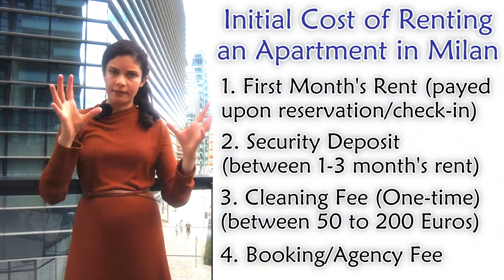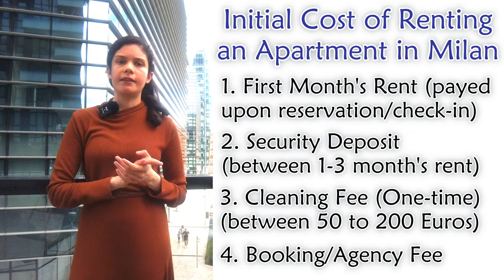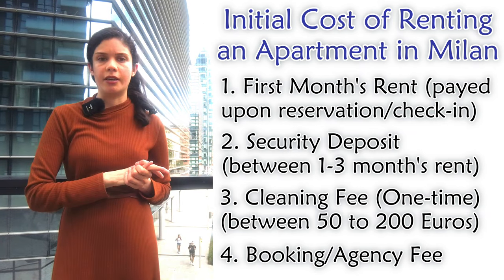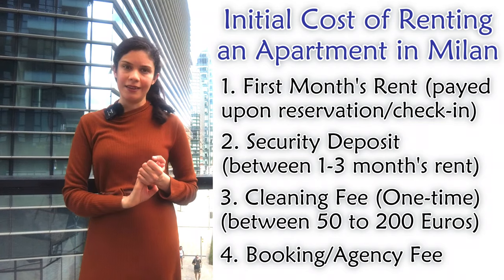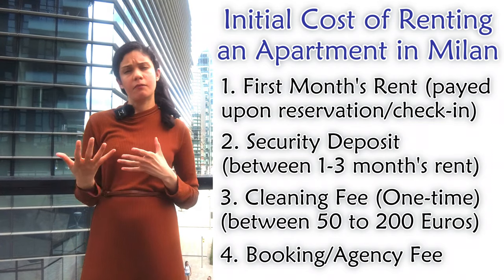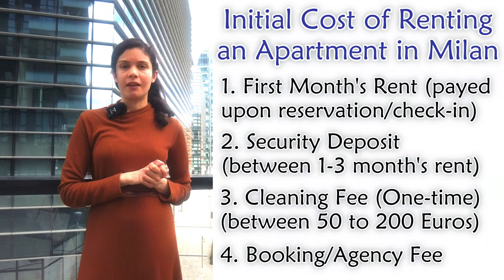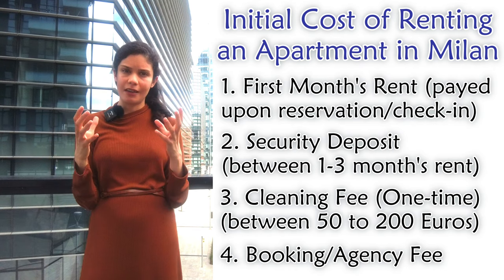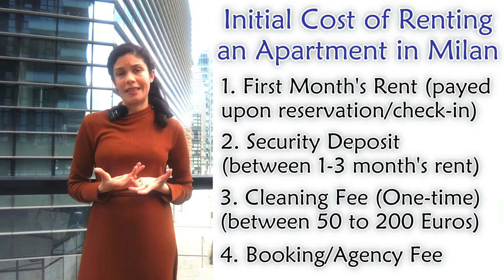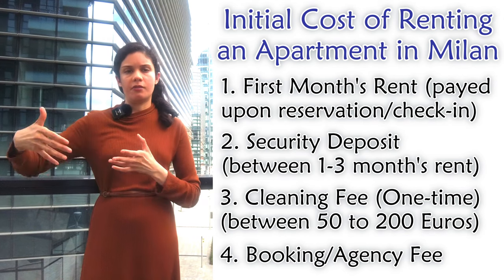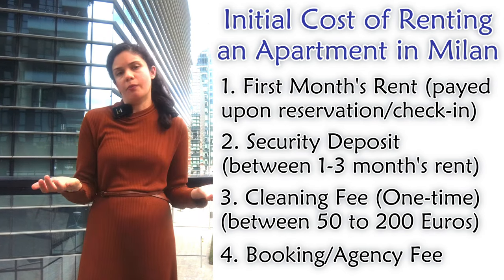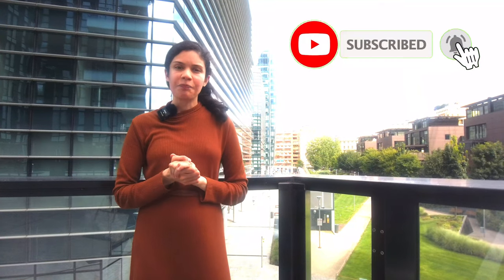The fourth and final component is the booking fee. If you're booking through a website like Spotahome or Uniplaces, they will charge a small one-time, non-refundable booking fee, usually payable upon reservation. These are the four components of the initial one-time expenditure when taking an apartment. After that, your ongoing monthly cost will be your rent and utilities, paid at the beginning or end of each month. I hope this video was useful in helping you find your dream place in Milan — if you liked it, share it, give a thumbs up, and subscribe to Good Morning Expats!